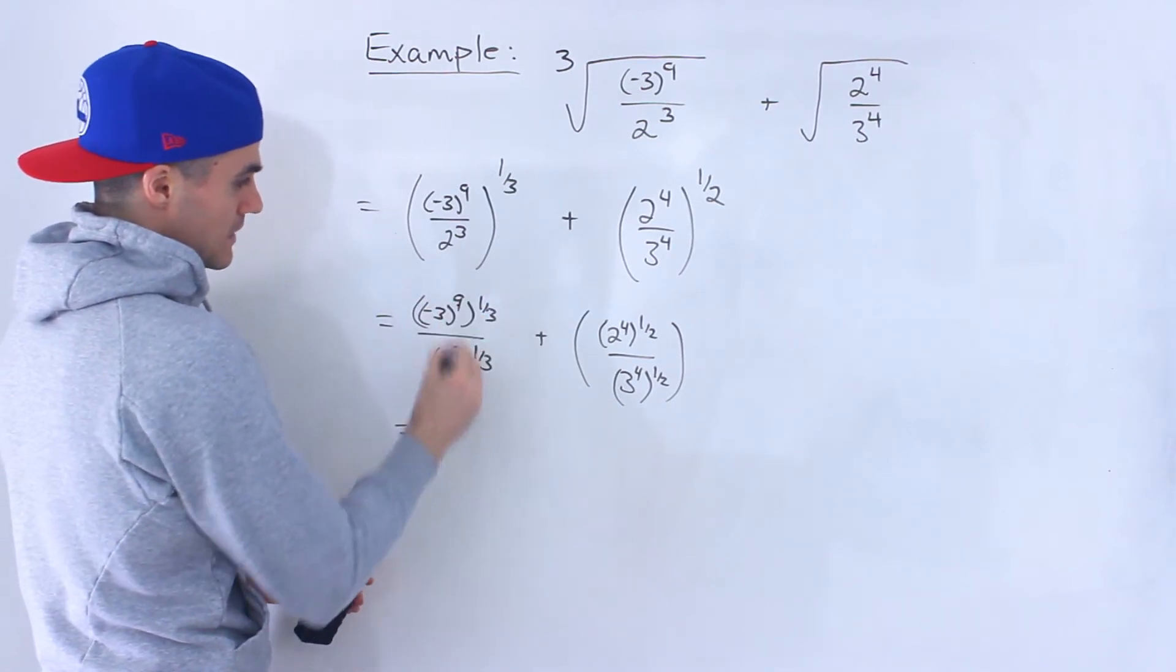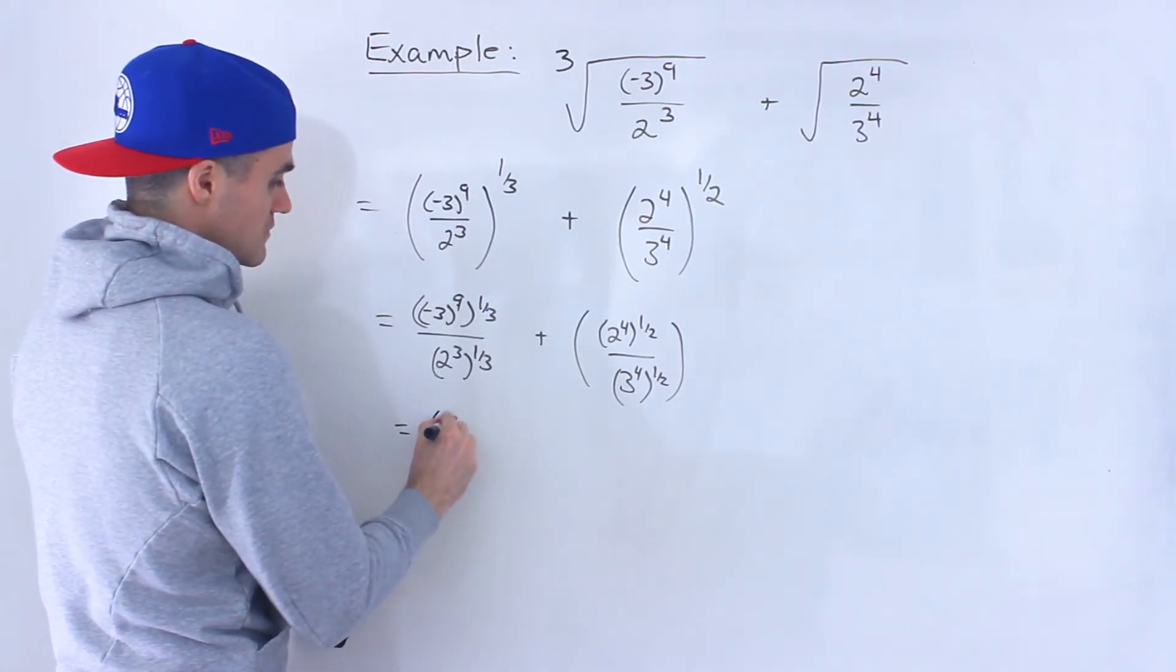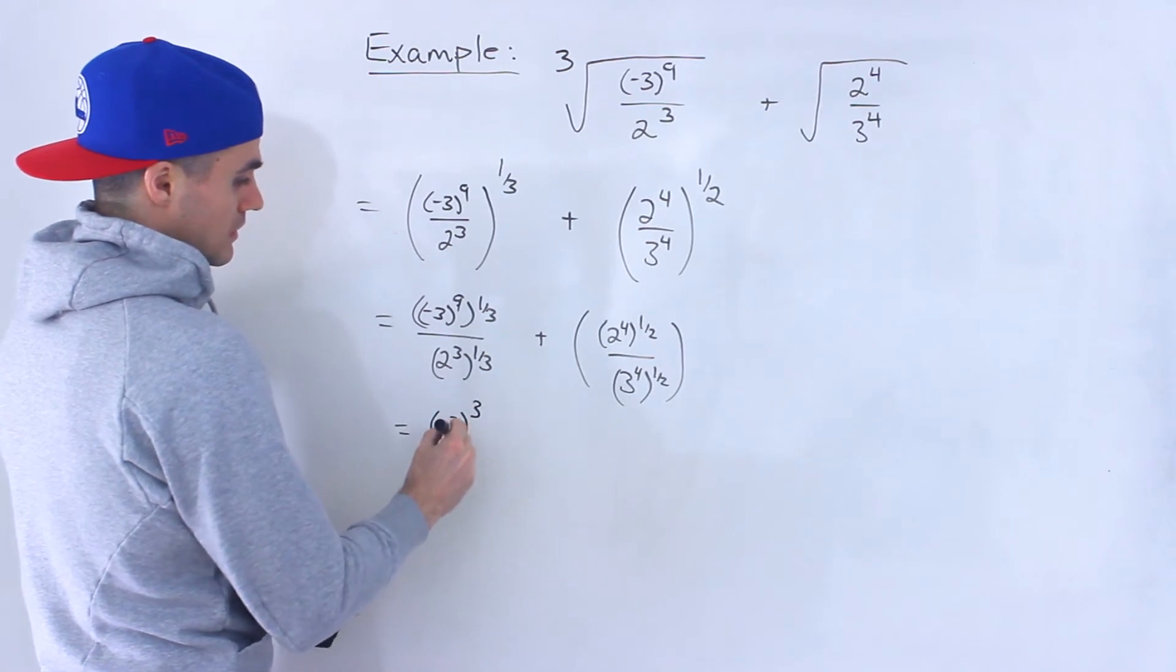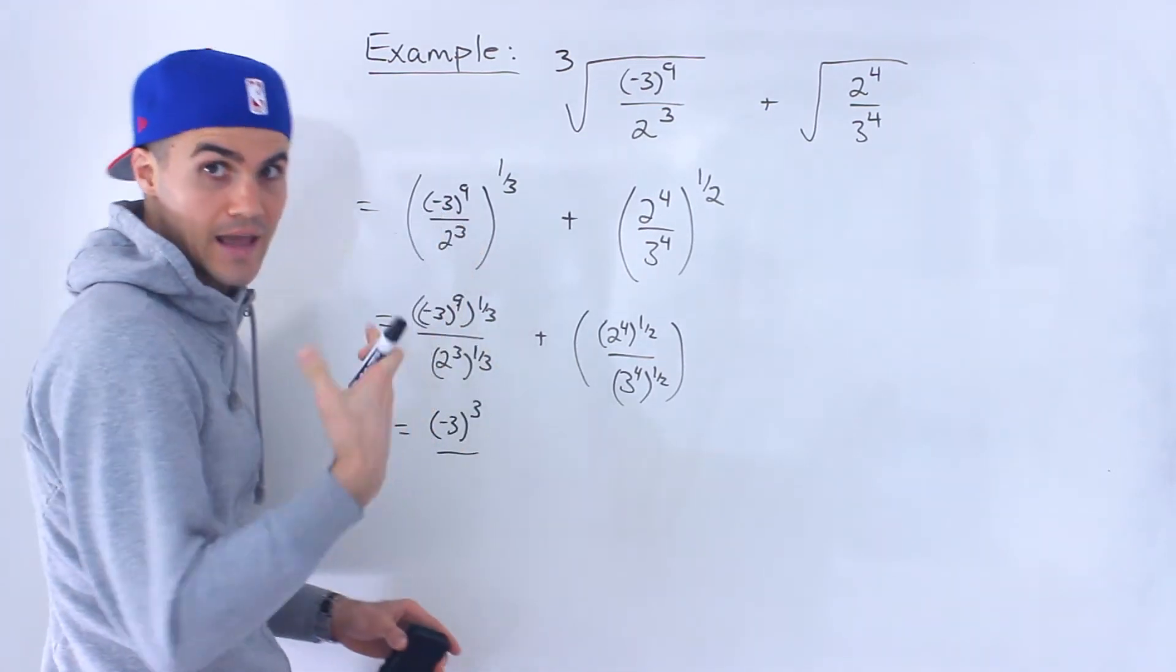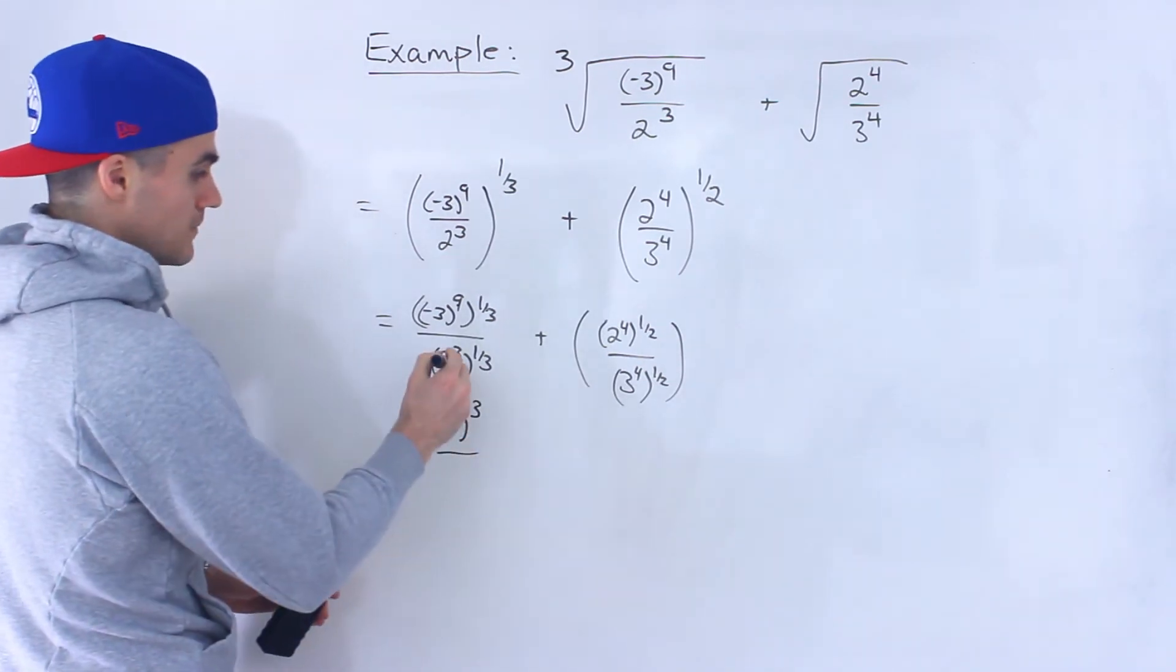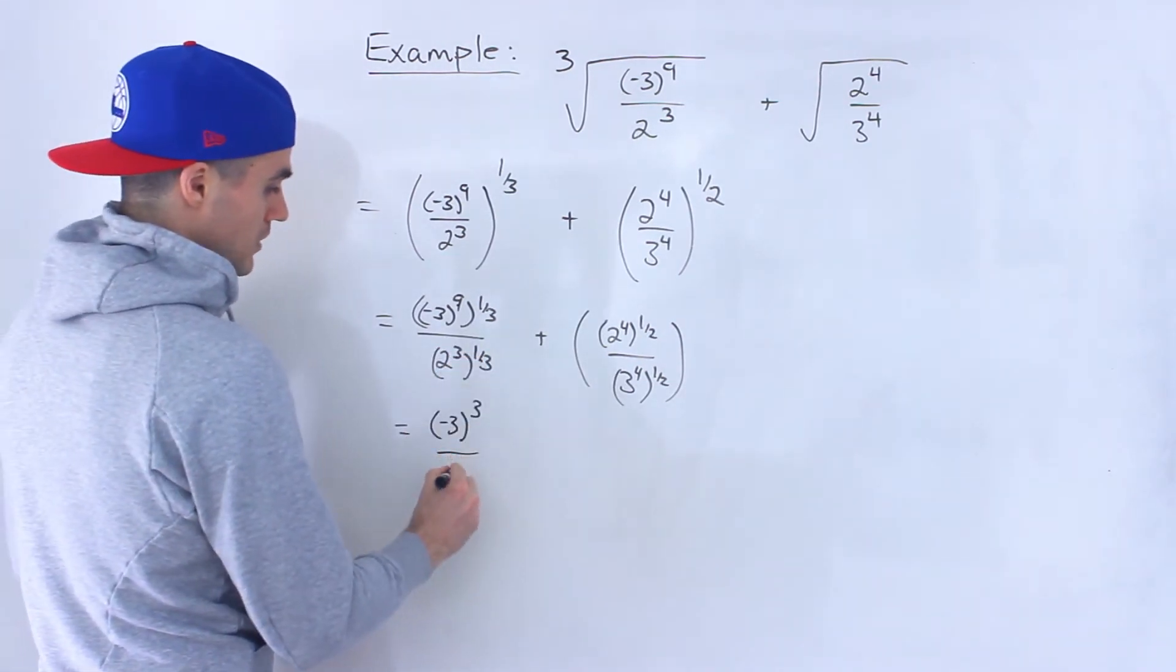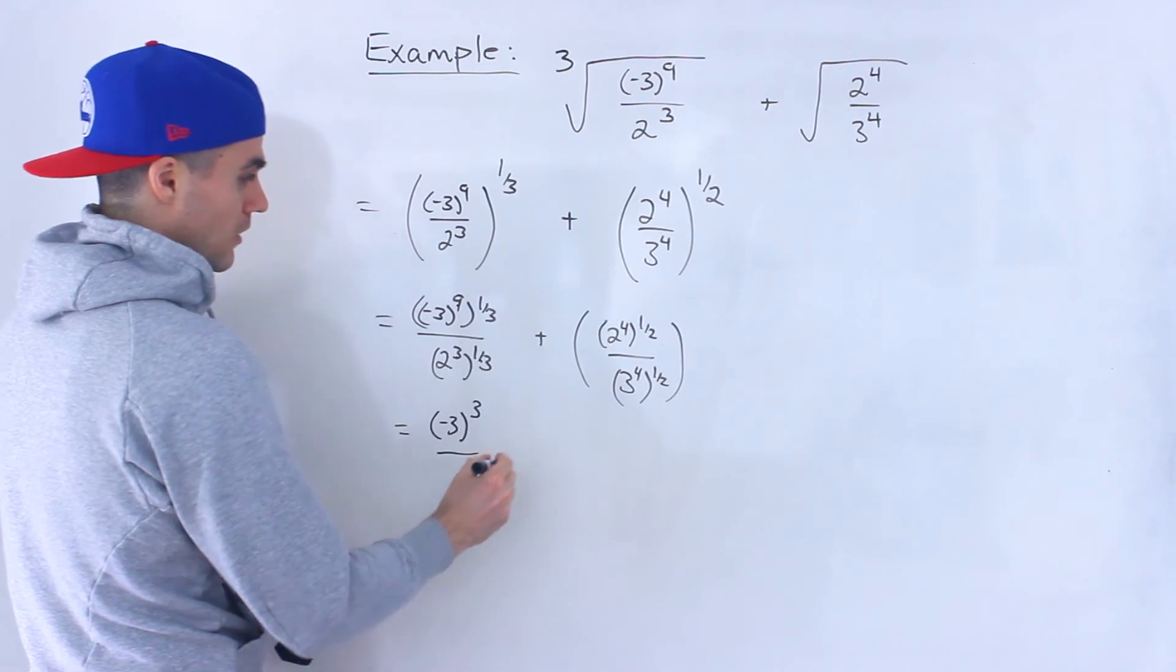Notice that 9 times 1 over 3 just gives us 3. Negative 3 to the power of 3 is a lot nicer to work with than negative 3 to the power of 9. Now 3 times 1 over 3 would be 1, so we'd have 2 to the power of 1 at the bottom.